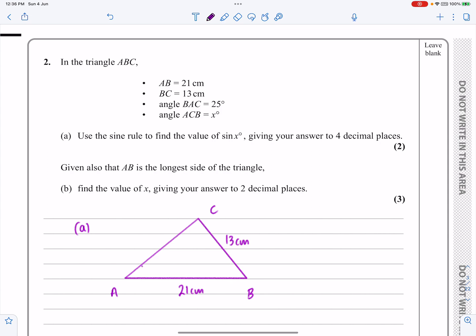Angle BAC, that's that one over there, is equal to 25 degrees. And they're telling me that ACB is here, that's going to be equal to X. And they're saying use the sine rule to find the value of sin X, giving your answer to four decimal places.